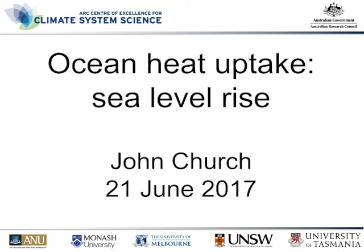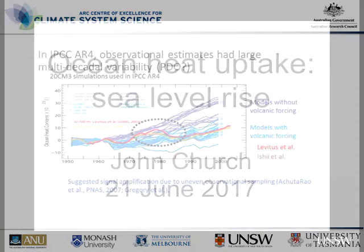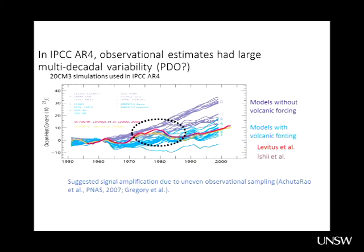There was really uneven sampling of the oceans, and therefore this could just be a sampling issue. But clearly there was a difference between what the observational record was saying about variability — particularly decadal variability — and what the model simulations were showing.